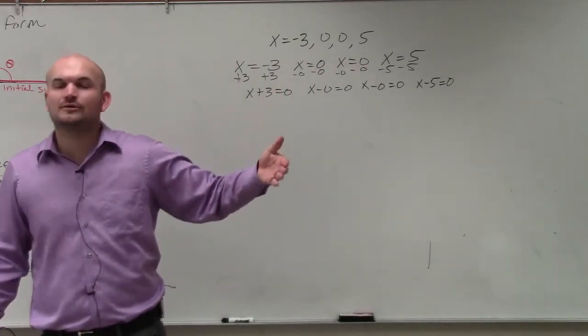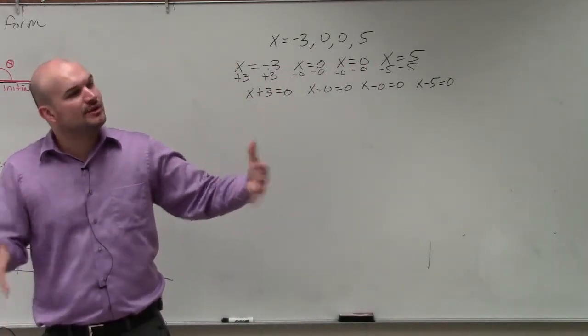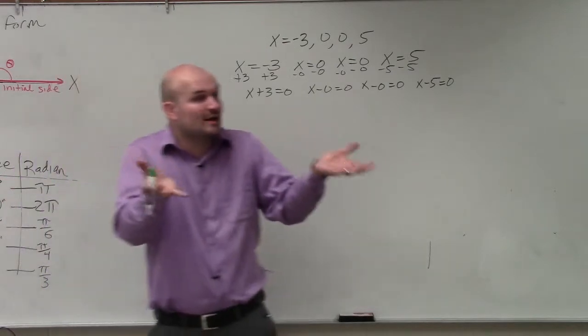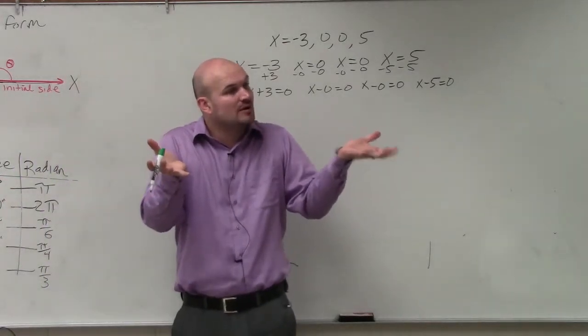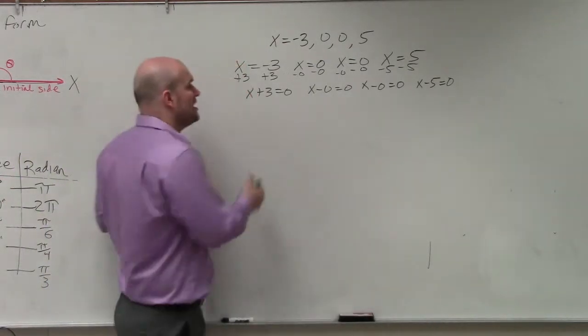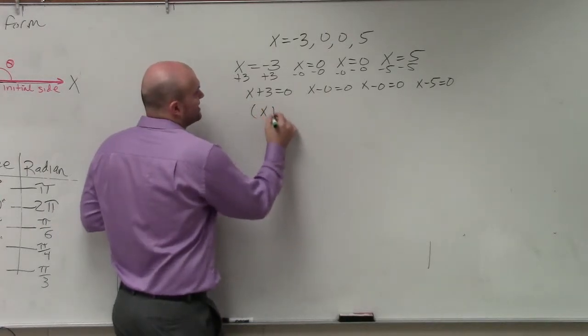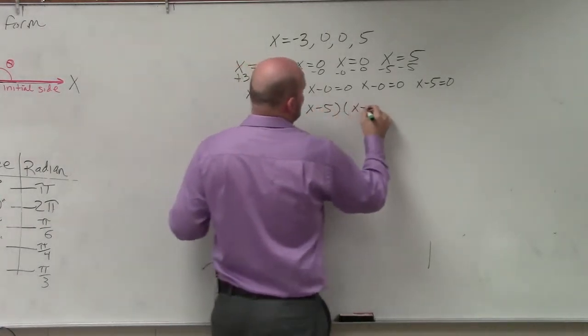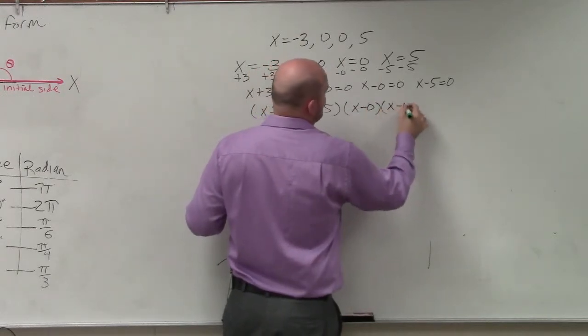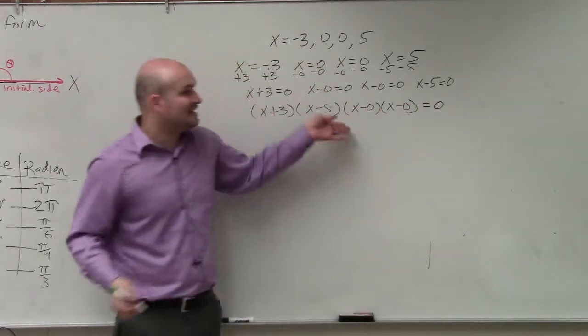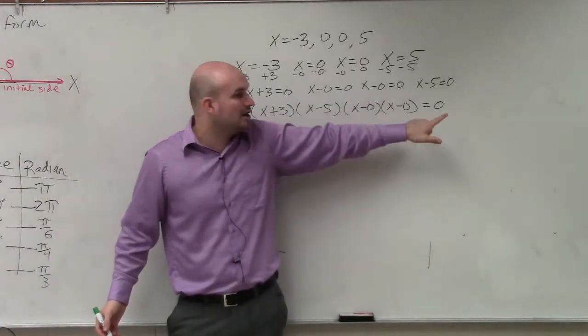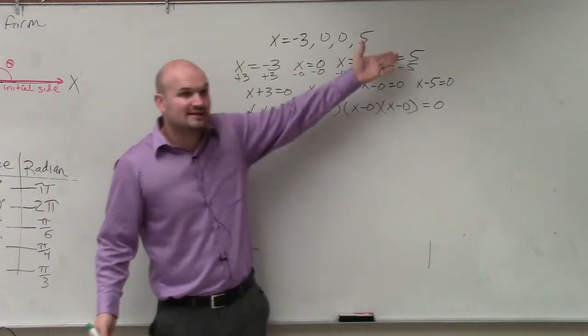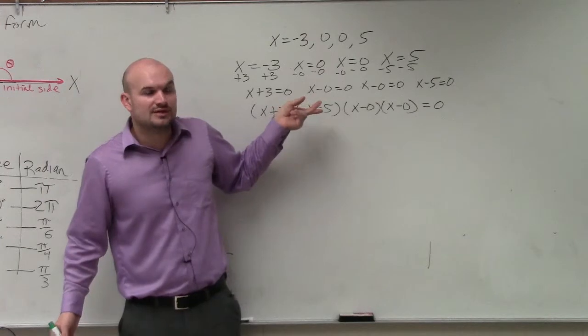Now, since we have them set equal to 0, what we can do is say when I have factors set equal to 0, I can rewrite them using the zero product property. So I could say that's x plus 3 times x minus 5 times x minus 0 times x minus 0 equals 0. If you guys remember, if I gave you a list of factors set equal to 0, you could easily write them all set equal to 0.